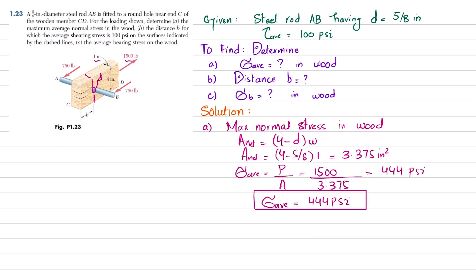Now we will move toward second part, which is distance B for shearing stress given as 100 psi. We know that shearing stress equals shearing load per unit shearing area. So load is P, and shearing area is this. This load will cause the steel shaft to move in this direction, so shearing area will be B into thickness T.